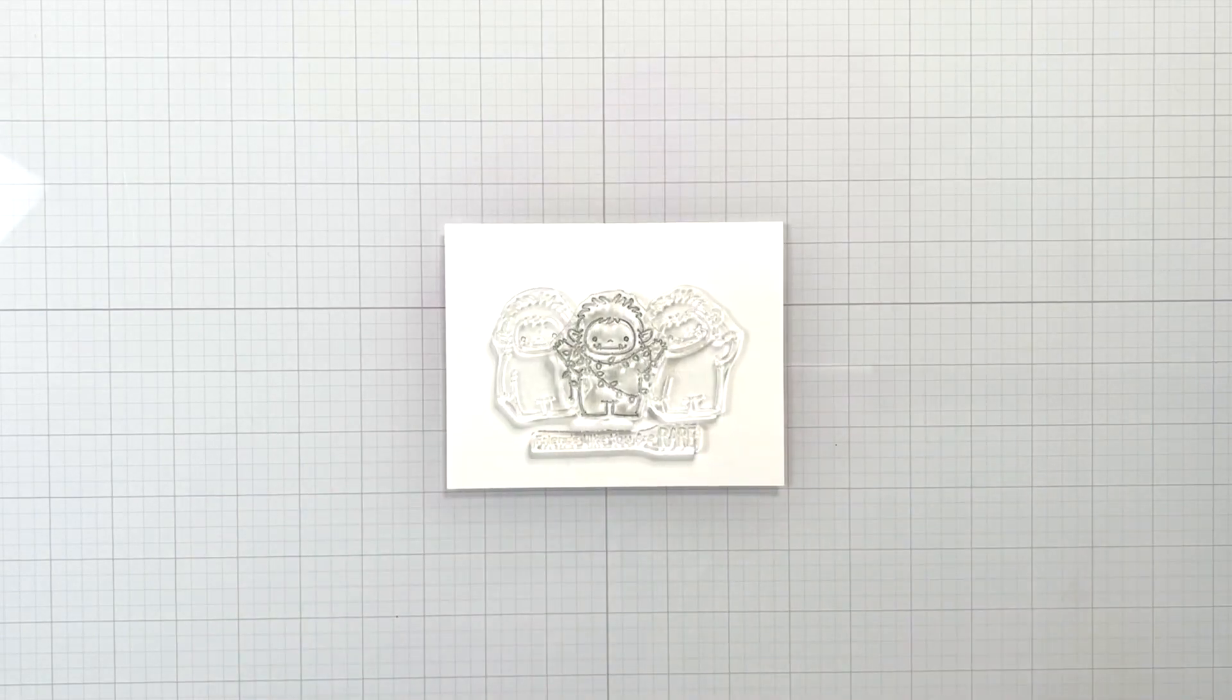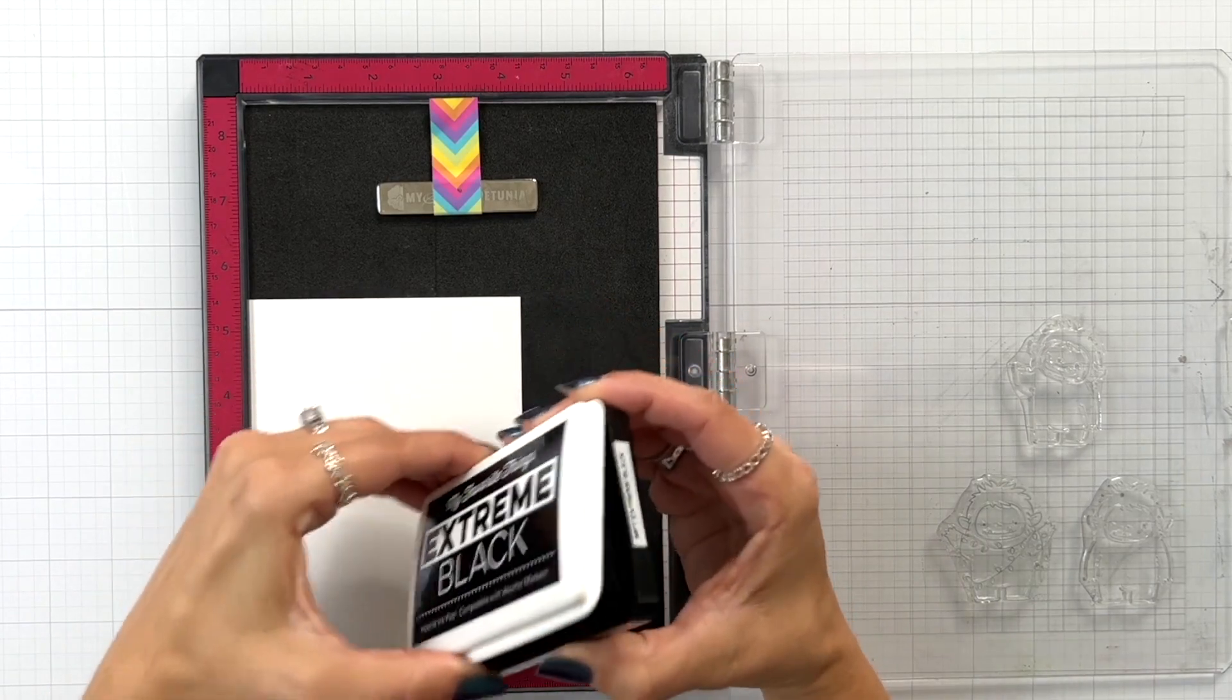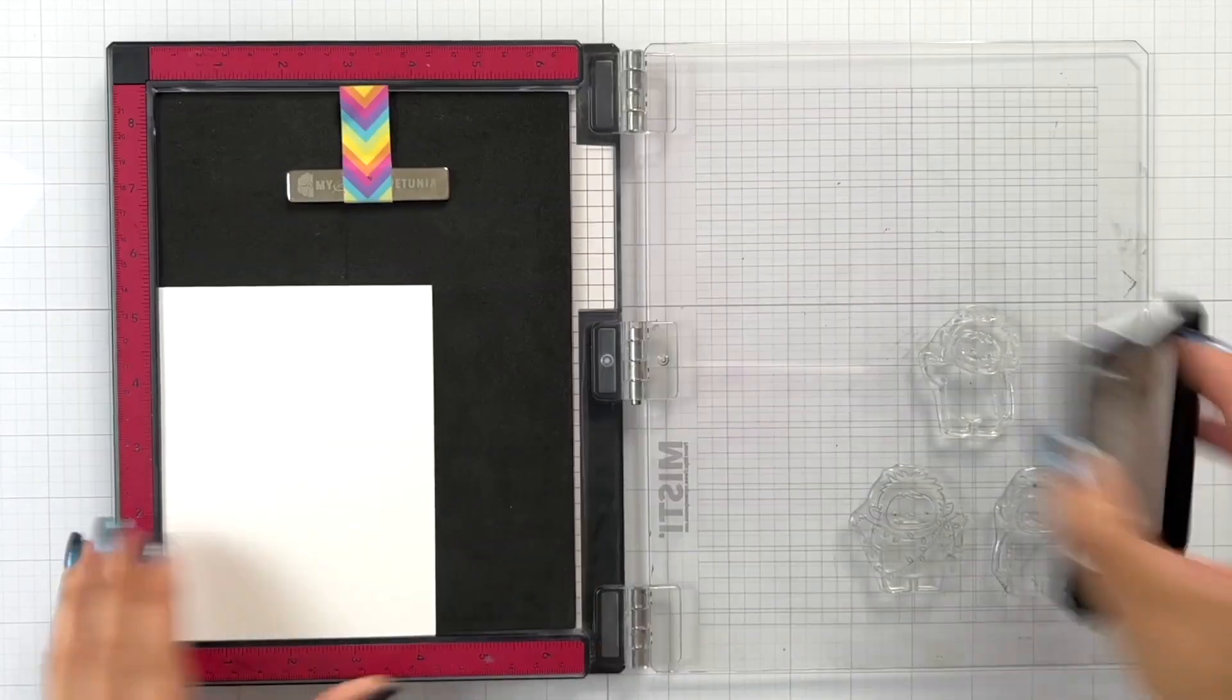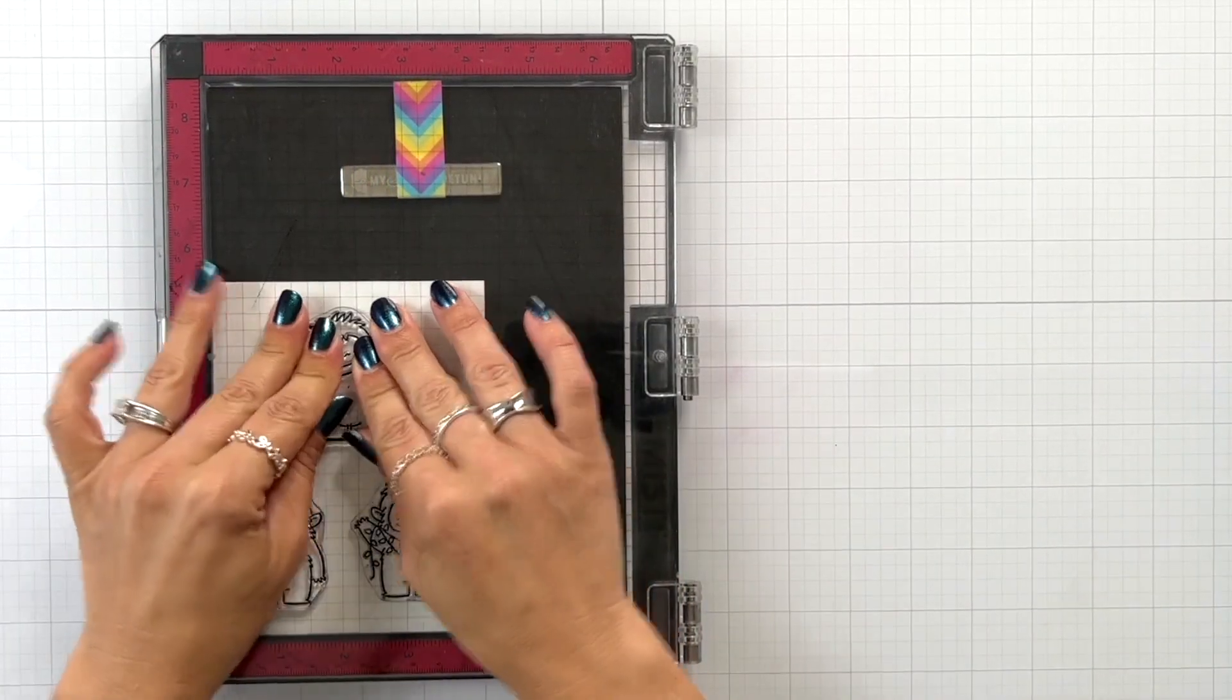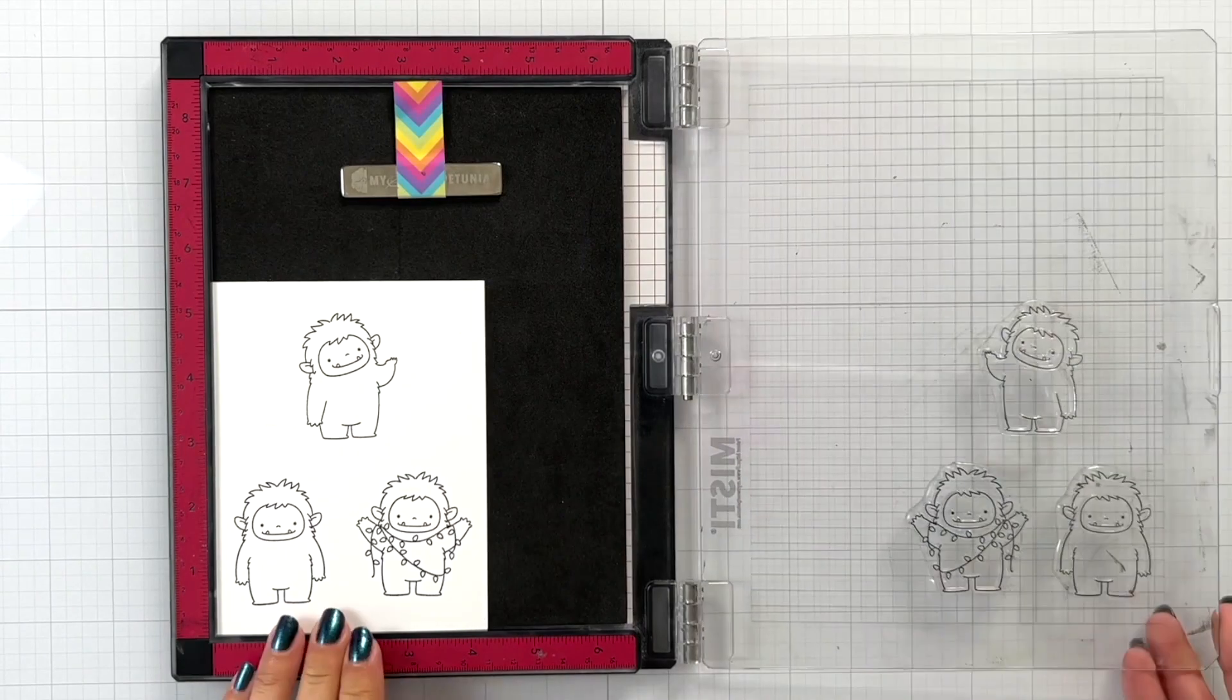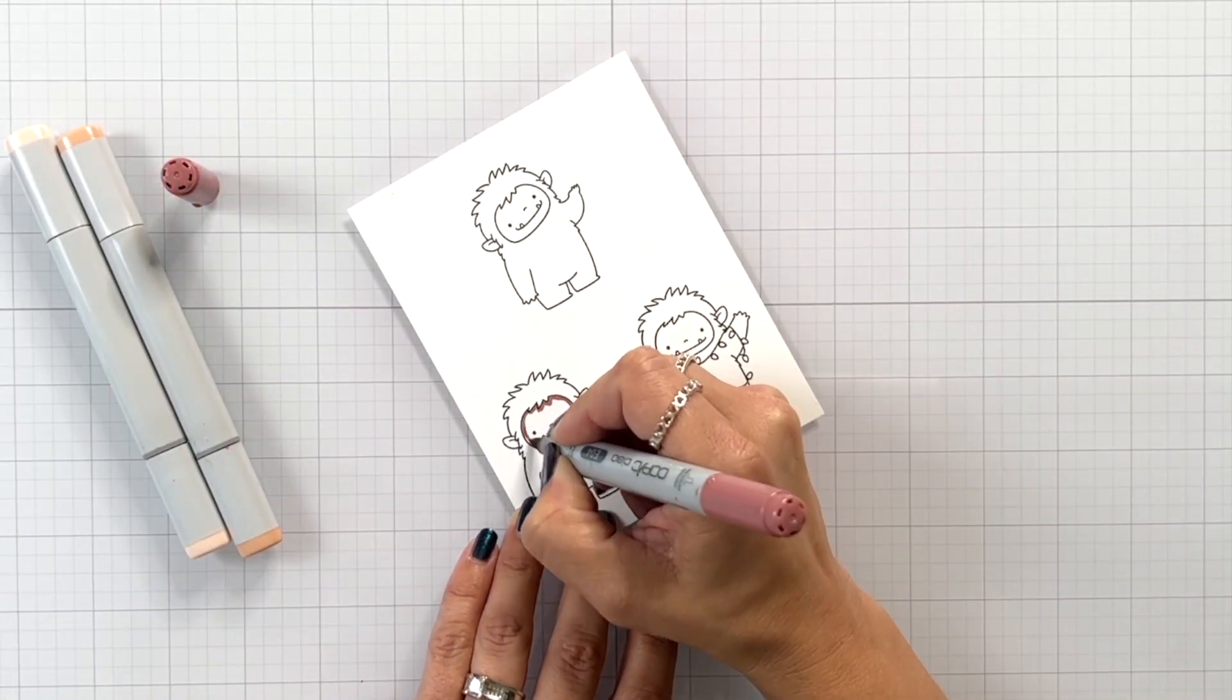I've always colored them as yetis, but today I'm going to change up that color combination a little bit. I started by picking out three of the images that I wanted to use on the front of my card and also a sentiment. Once I figured out about where I wanted everything to go, I'm going to stamp these three images onto 80-pound white cardstock using the My Favorite Things black ink.